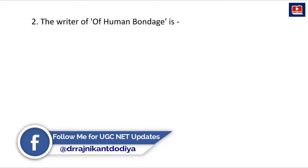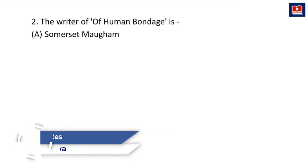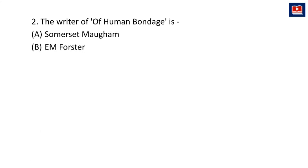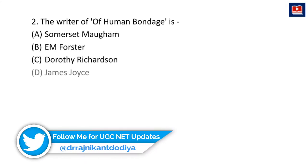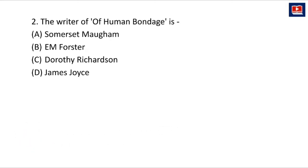The next question is: the writer of Of Human Bondage is — Somerset Maugham, E.M. Forster, Dorothy Richardson, or James Joyce? Of Human Bondage is a very popular novel of the Modern Age, and its writer is Somerset Maugham. Yes friends, Somerset Maugham wrote this famous novel Of Human Bondage.